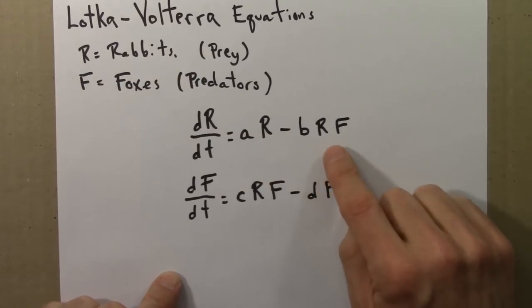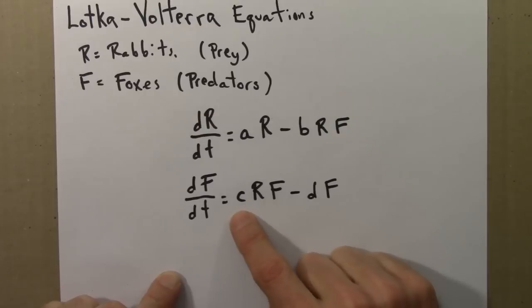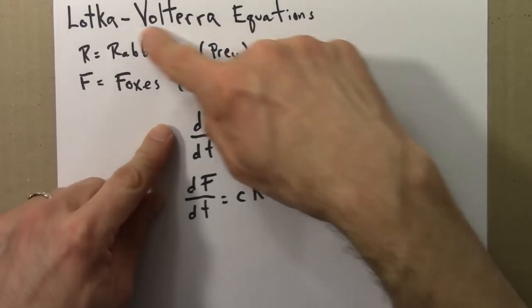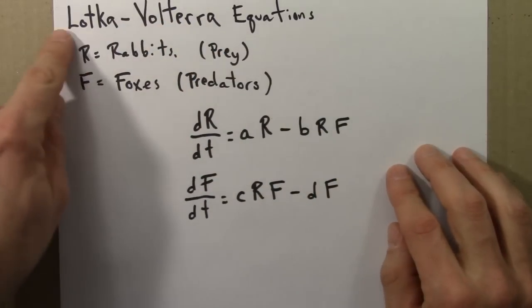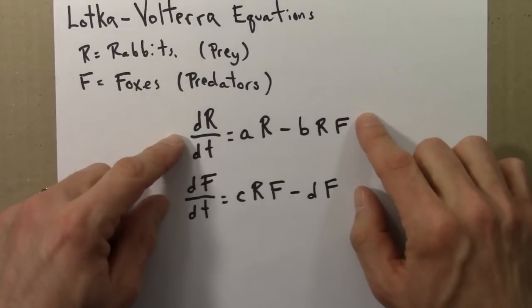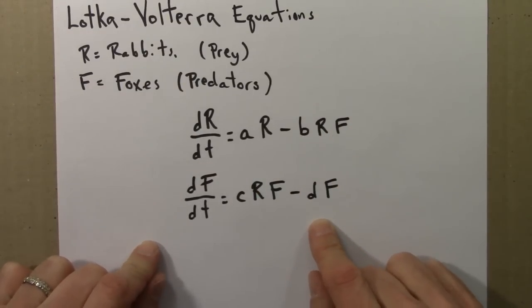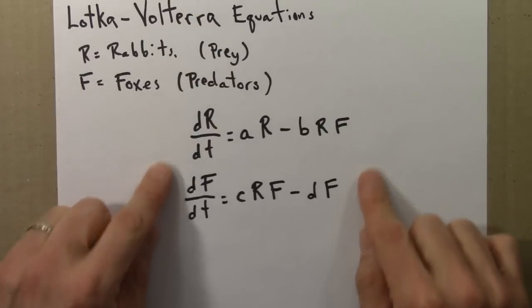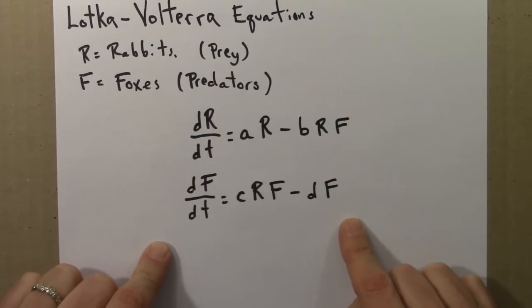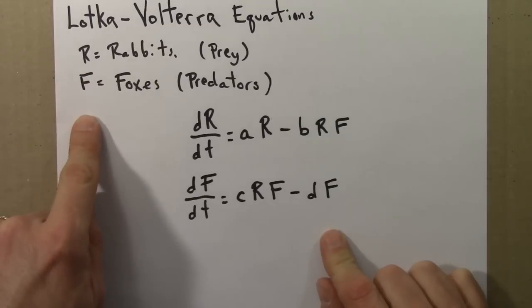So we have these two terms. Rabbit growth moderated by being eaten by foxes, and fox growth because they're eating the rabbits, moderated by some natural death rate. These two terms taken together have the form of a Lotka-Volterra model put forth by Lotka and Volterra about a century ago. And again, A, B, C, D are parameters that would be adjusted.